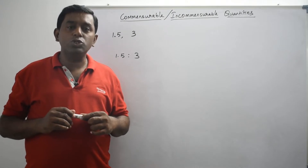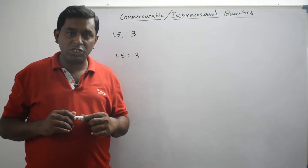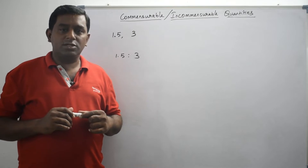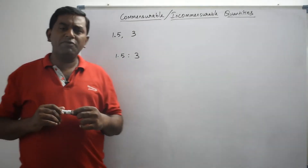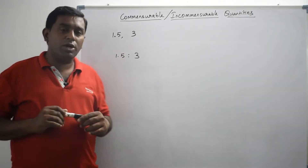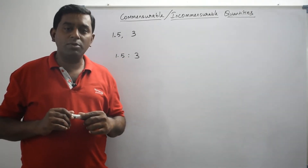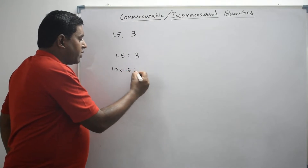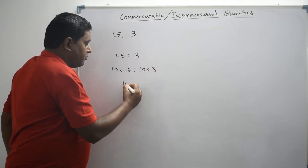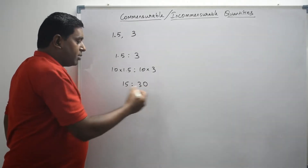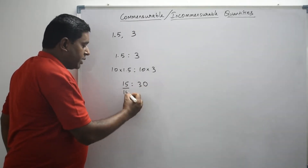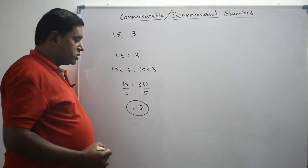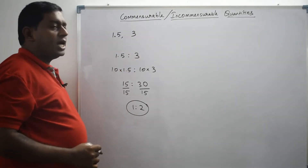In this case, we are allowed to use only two mathematical operations: multiplication and division. To make the first term 1.5 an integer, I multiply both terms of this ratio by 10. So 10 times 1.5 and 10 times 3 gives us 15 is to 30. Now there is a common divisor 15 for both 15 and 30, so I divide each term by 15 and get 1 is to 2.